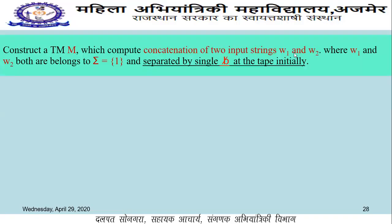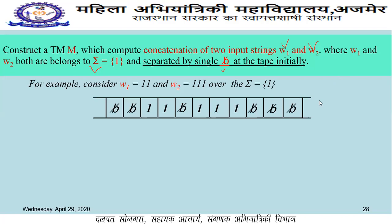We are given two strings W1 and W2 and we have to concatenate both of them. Both strings W1 and W2 belong to sigma {1}, meaning both are purely strings of 1s, and they are separated on the input tape of the Turing machine by a single blank. This is the restriction. We look at both strings on the Turing machine input tape — W1 having two 1s and W2 having three 1s, separated by a single blank according to the question.